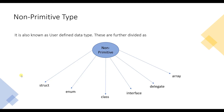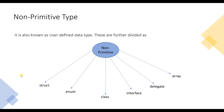Non-primitive data types are user-defined types. As shown in the diagram, classes, enums, interfaces, delegates, arrays, etc. are the non-primitive data types.